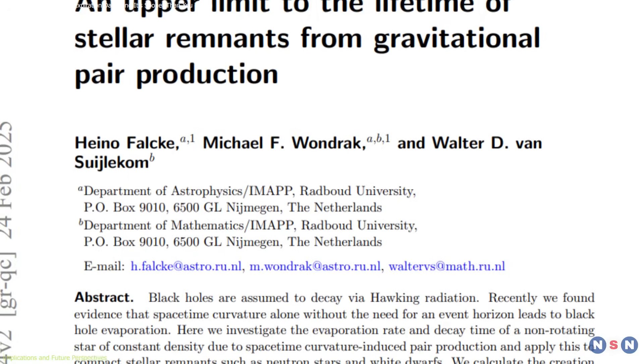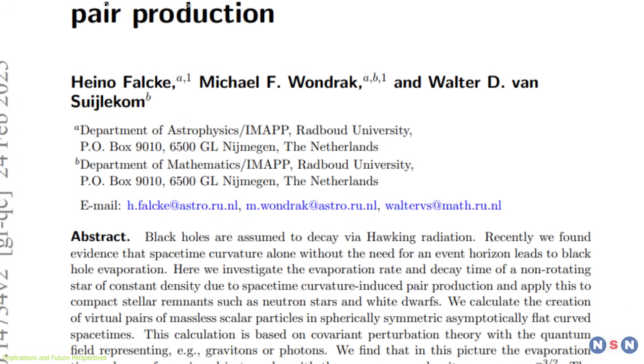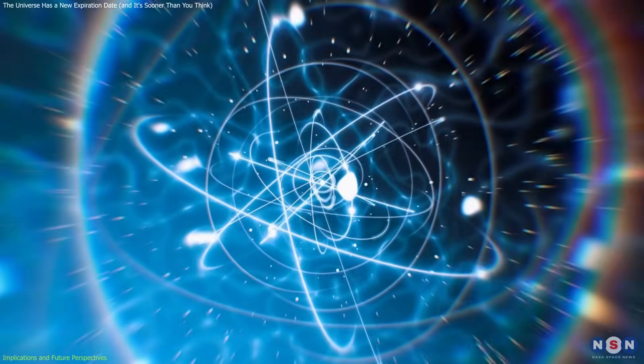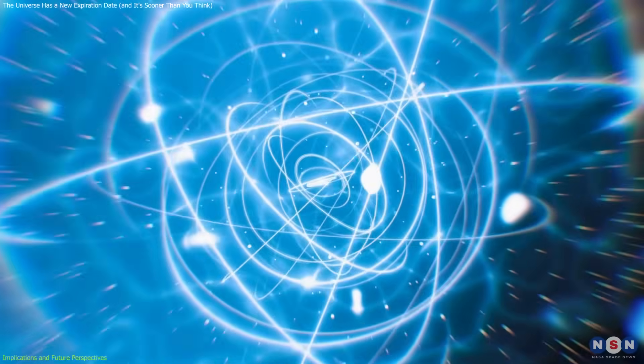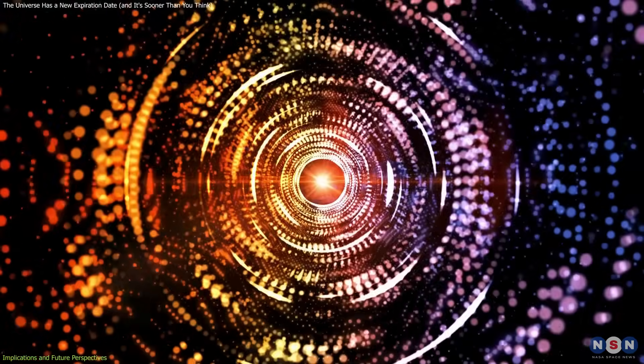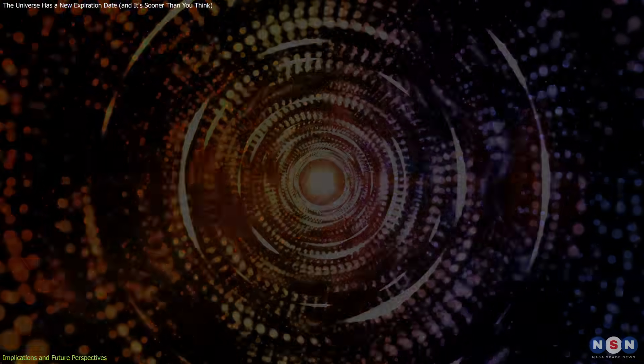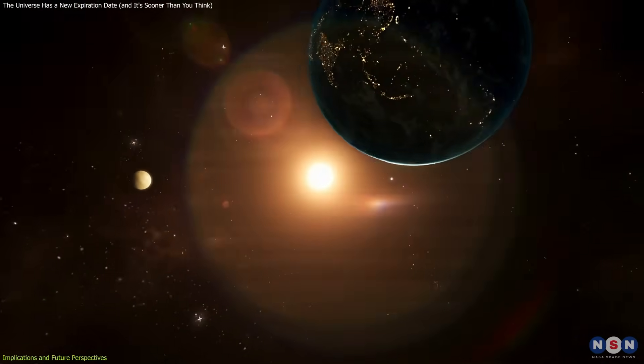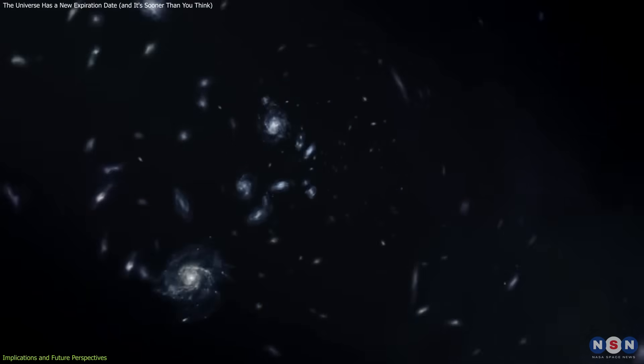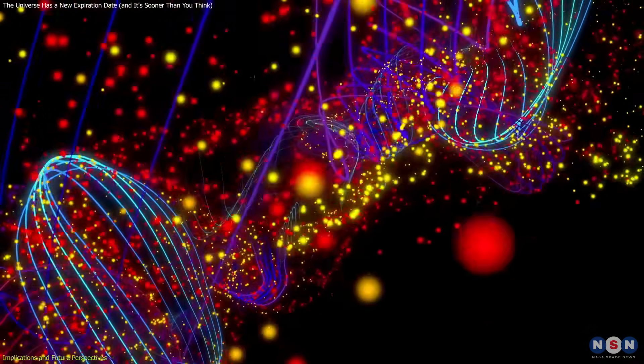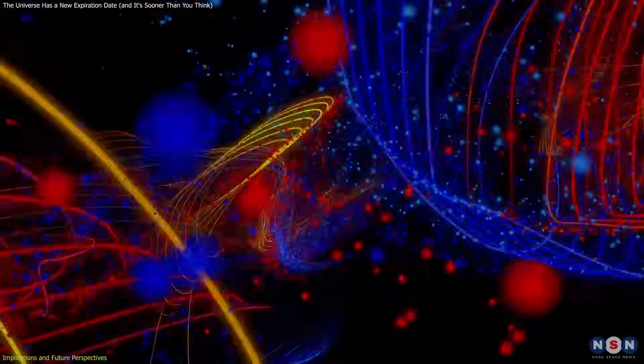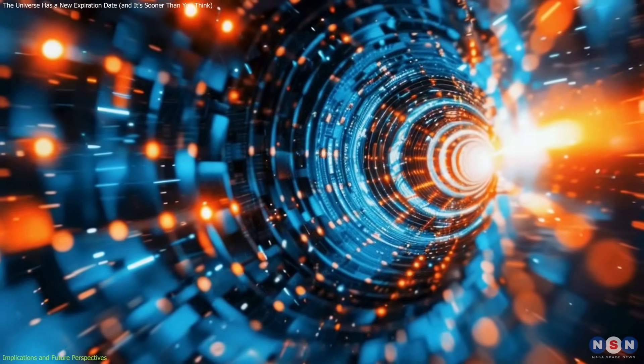This revelation doesn't just revise the numbers on a cosmic calendar. It opens the door to solving one of the greatest puzzles in modern physics, uniting the microscopic rules of quantum mechanics with the grand architecture of general relativity. For decades, physicists have wrestled with this divide. General relativity explains how gravity shapes the motion of planets, galaxies, and the expansion of the universe. Quantum mechanics, on the other hand, governs the world of particles, probability, and uncertainty. Yet gravity remains stubbornly absent from quantum theory.